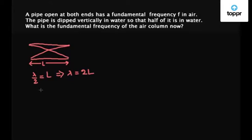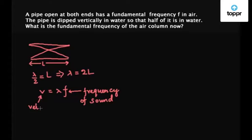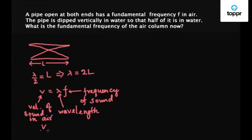We know that the velocity of sound is given by V equals lambda times F, where F is the frequency of sound and V is the velocity of sound in air. So V upon lambda equals F. Substituting lambda equal to 2L, we get F equal to V upon 2L.